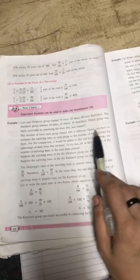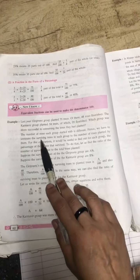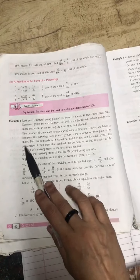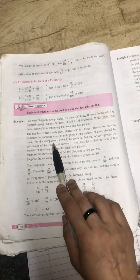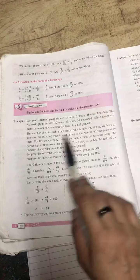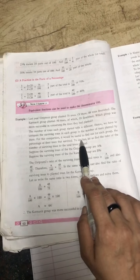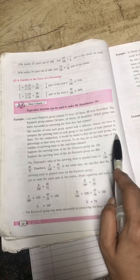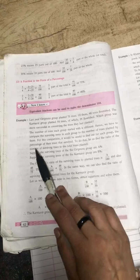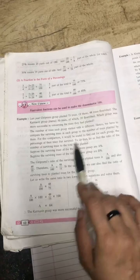Here the number of trees each group started with is different. Each group has started with different number of trees. Hence we have to compare the surviving trees in each group to the number of trees planted by them. For this comparison, it would be useful to find out for each group the percentage of their trees that survived. To do that, let us find the ratio of the number of surviving trees to the total trees planted.